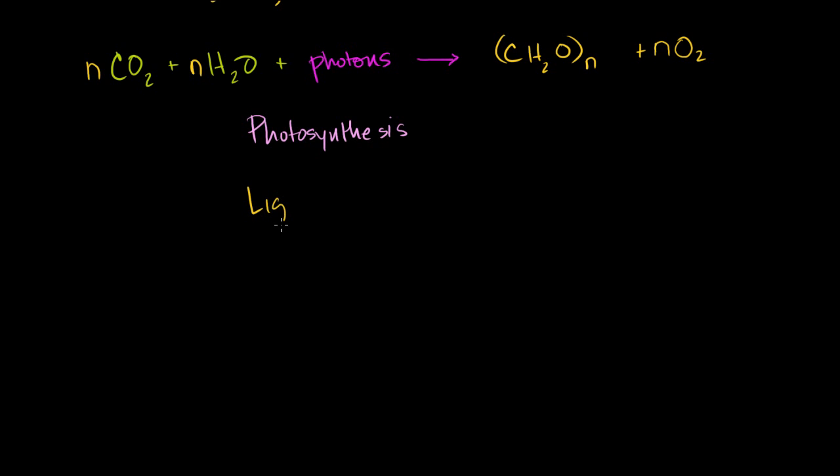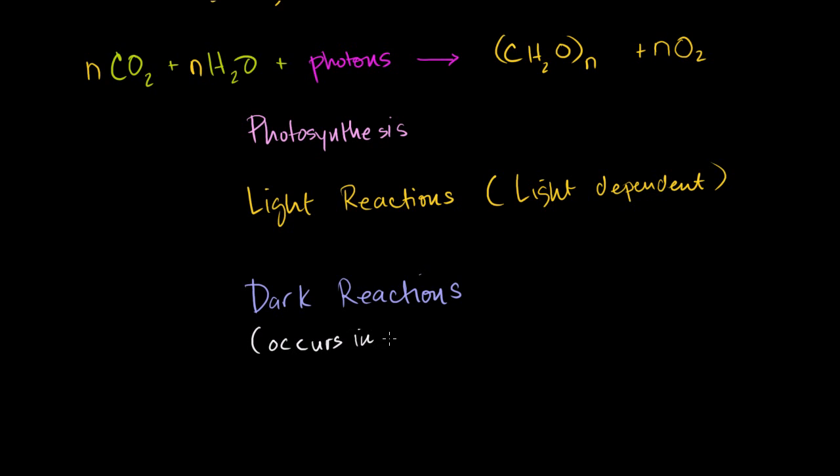We can call one the light reactions, or sometimes they're called the light-dependent reactions, and that actually would probably be a better way to write it. Light-dependent means that they need light to occur. And then you have something called the dark reactions, and that's actually a bad name, because it also occurs in the light. I wrote it in a slightly darker color. The reason why I said it's a bad name is because it still occurs in the light. But the reason why they probably called it the dark reaction is that you don't need light, or that part of photosynthesis isn't dependent on photons to occur. So a better term for it would have been light-independent reaction.